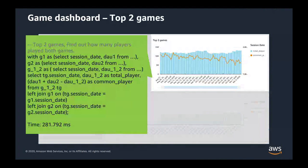We can also leverage HLLSketch to get the intersection count of two distinct value sets. Let's check how many players played both game A and game B on a given day. Note that estimating the total number of players by summing the two distinct counts, unlike HLLSketch merge, will incur a higher error rate.